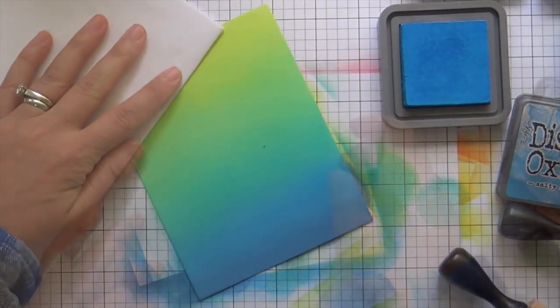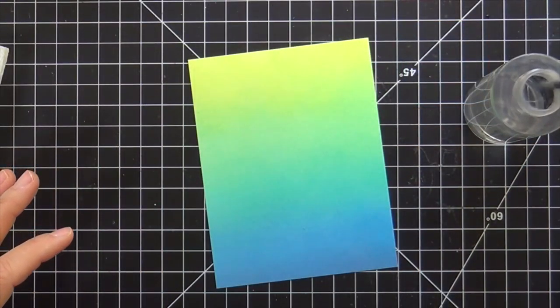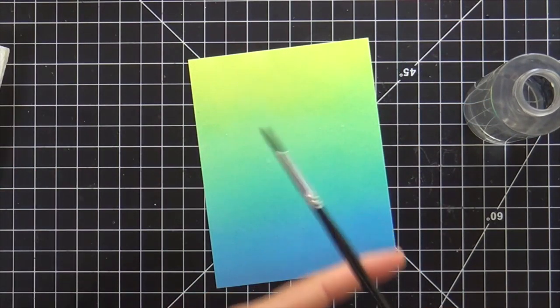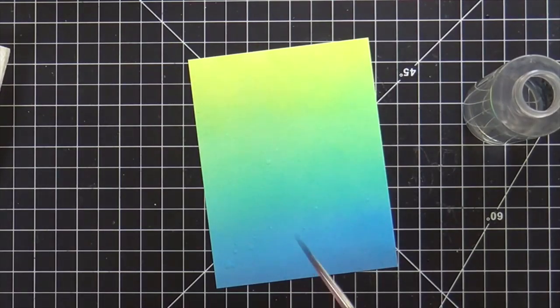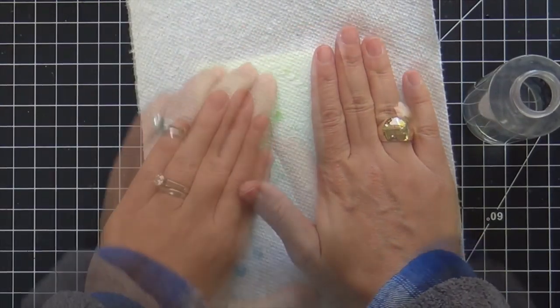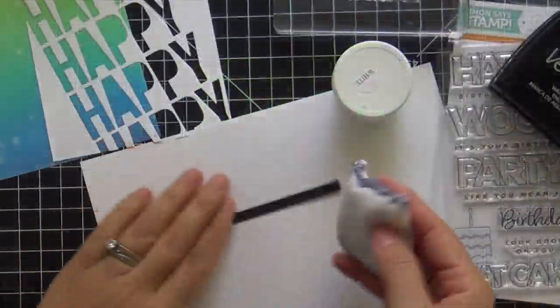Bristol paper, which I'm on a kick with right now. Actually, the reason is because I ran out of the Distress Watercolor Cardstock—got to go get some more—but in the meantime, I've been using Bristol paper and I love it. Then I flicked on some water